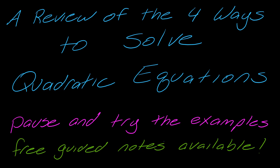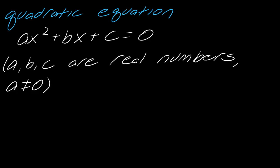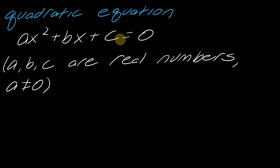This is a review of the four ways to solve quadratic equations — a good video to watch if you're a little rusty. First of all, what is a quadratic equation? When we say quadratic equations, we are specifically referring to something that has the form ax squared plus bx plus c equals zero. We're trying to solve for x. The a, b, and c are usually going to be numbers — they can be real numbers, which means they can really be anything. And a does not equal zero.